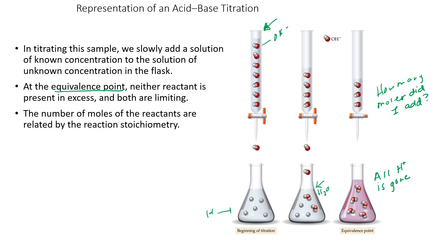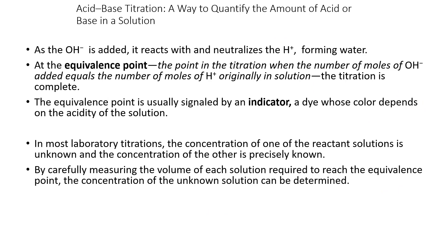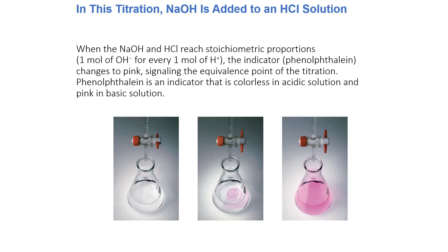As the OH- is added, it reacts and neutralizes the H+ making water. At the equivalence point, that's when the number of moles of OH- equals the number of moles of H+. The titration is completed and it's usually signaled by an indicator that changes color depending on how much acid is in the solution. If we carefully measure the volume of each solution, then we can calculate the unknown concentration of either the acid or the base.